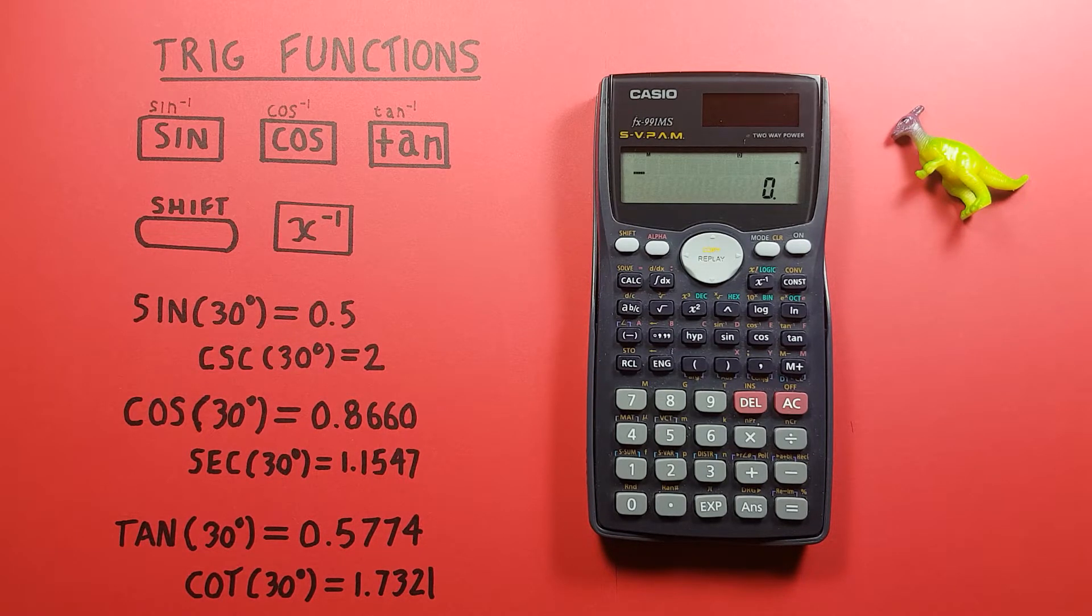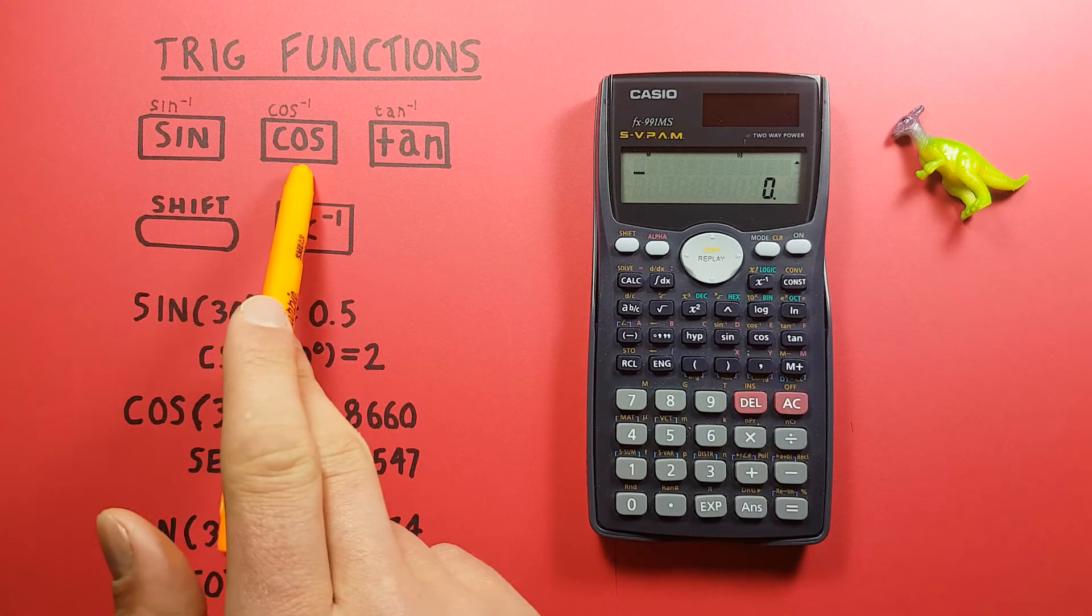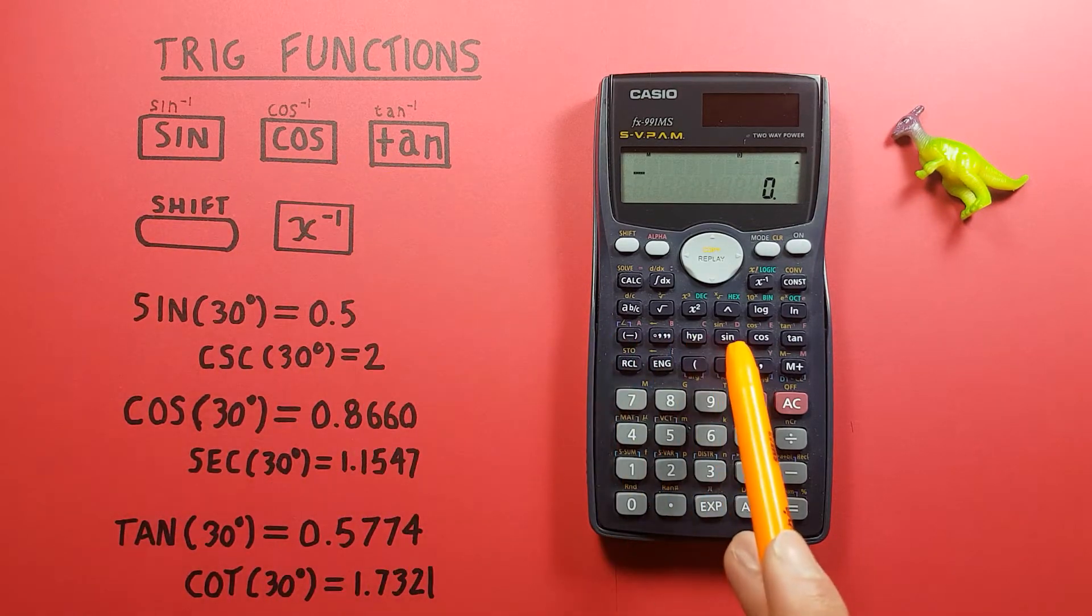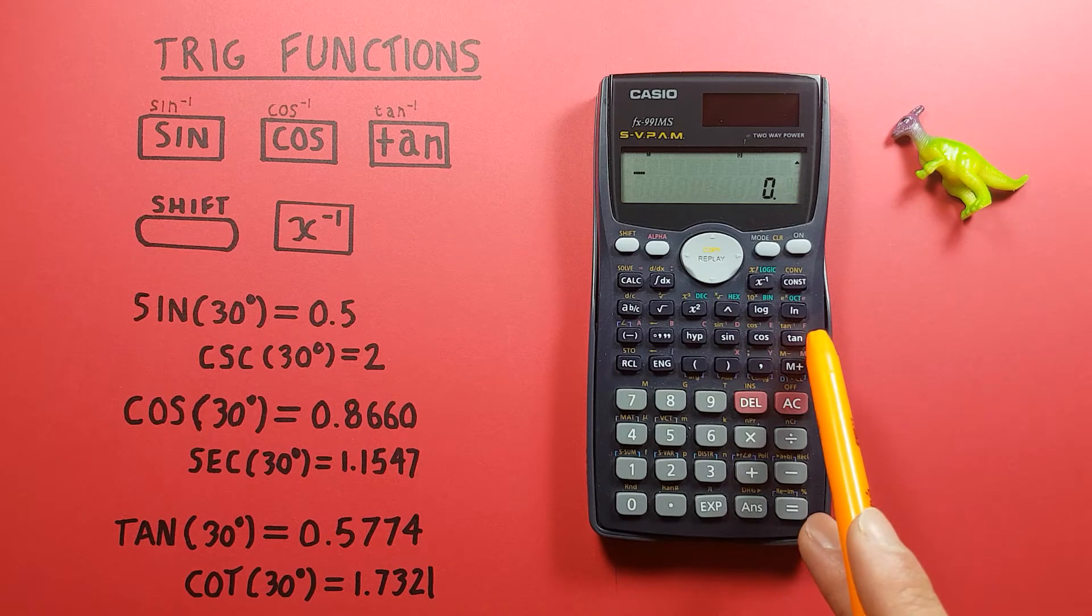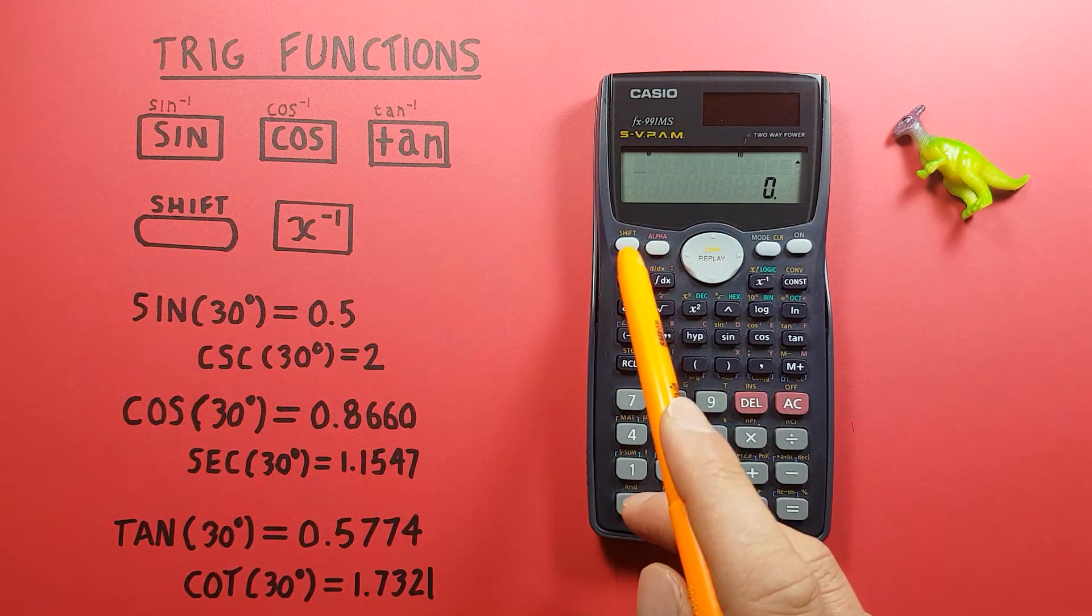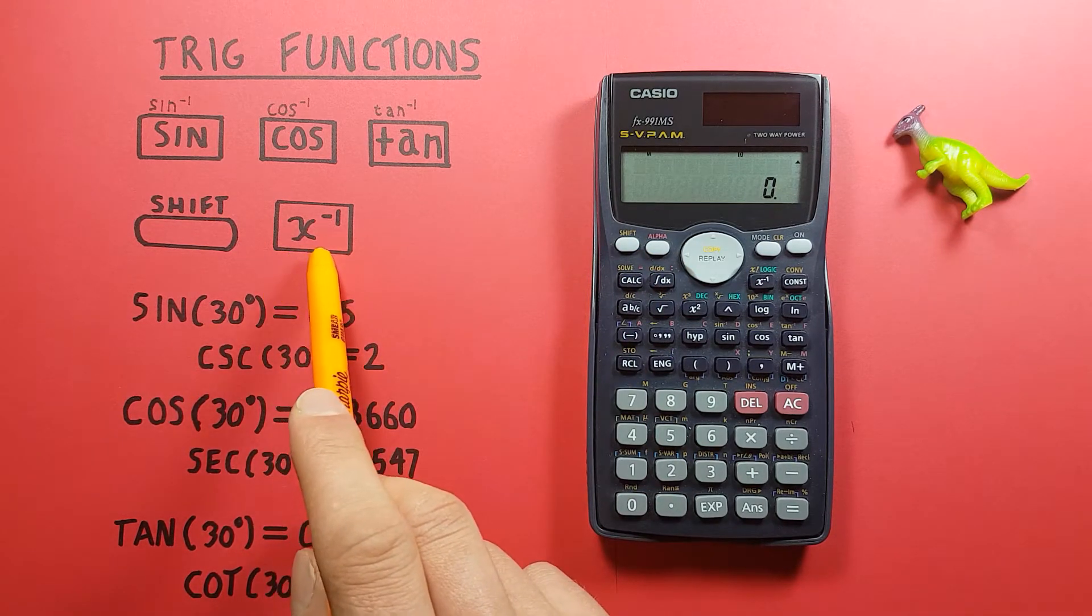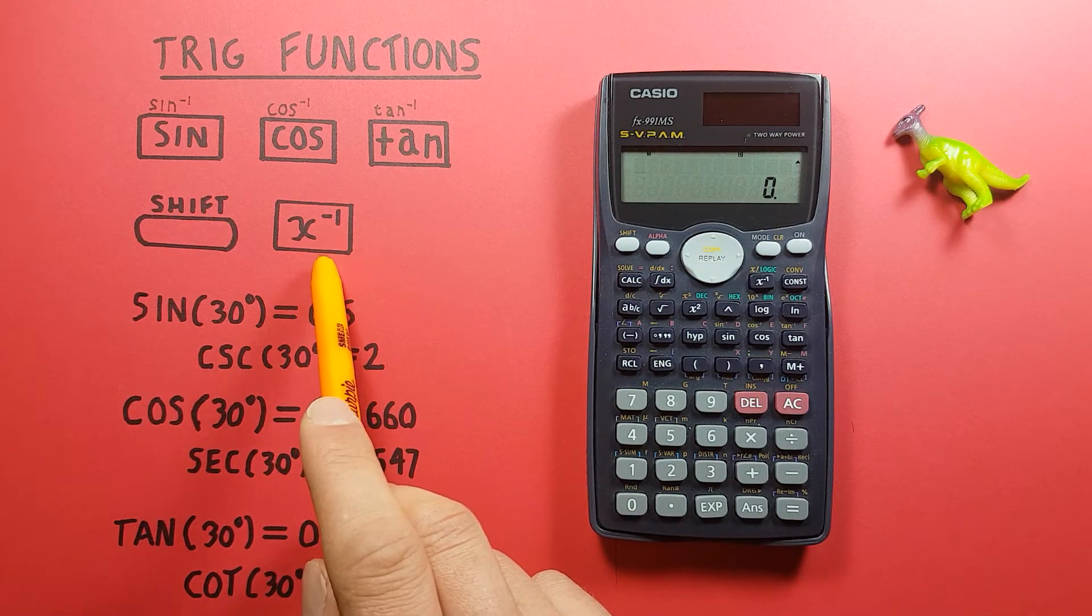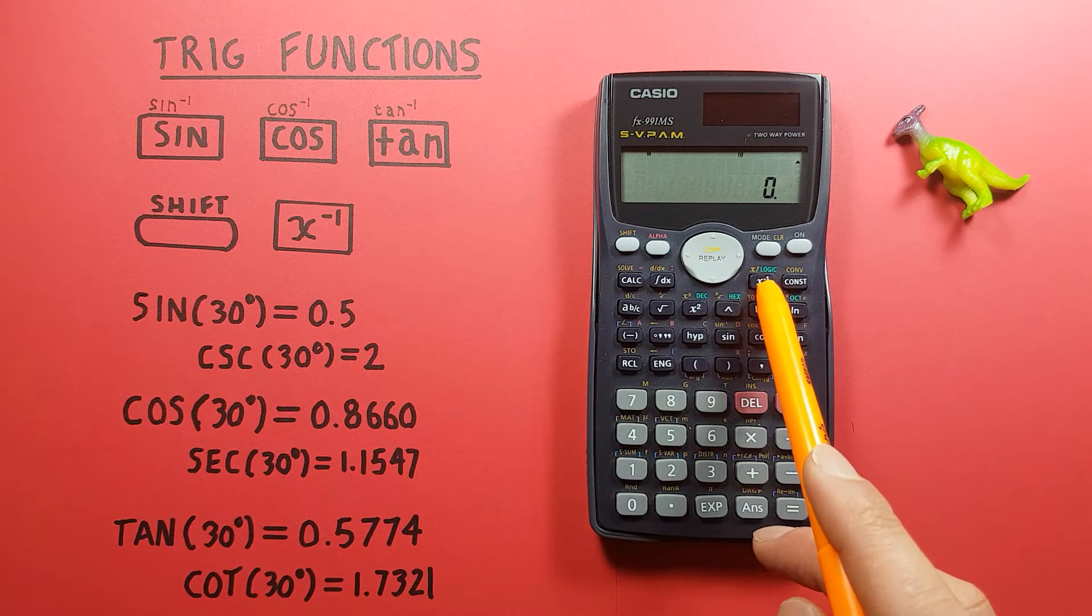To do this we'll be using the sine, cosine and tangent keys located along here, as well as the shift key located here and the x to the power of negative 1 or x inverse key located up here.